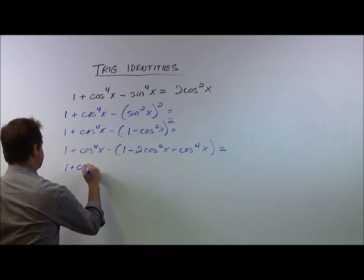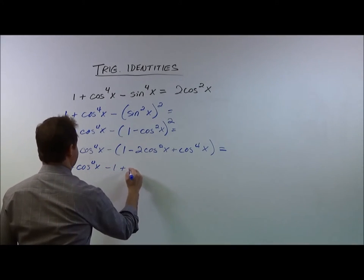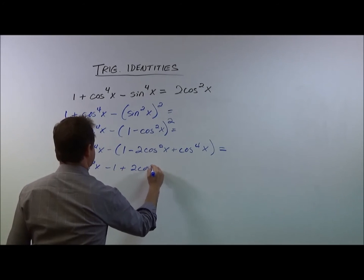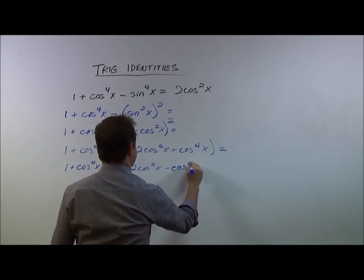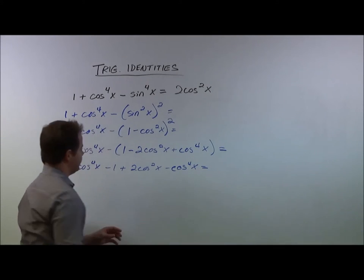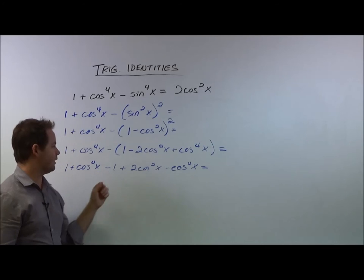So we've got 1 plus cosine to the fourth of x minus 1 plus 2 cosine squared of x minus cosine to the fourth of x. So right there, really all we did was change the sign of everything as we distributed that negative throughout the parentheses.